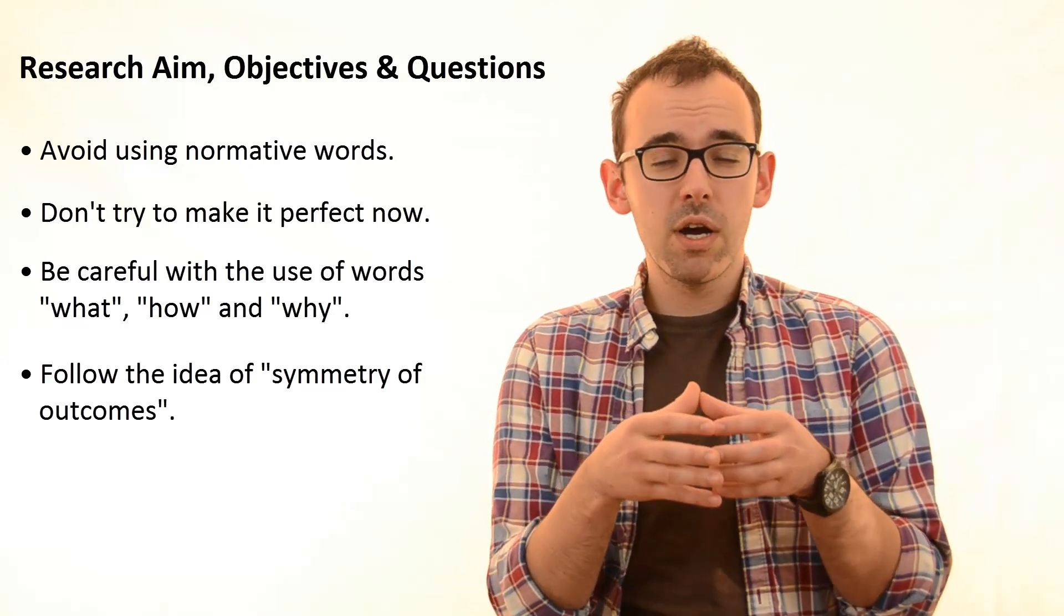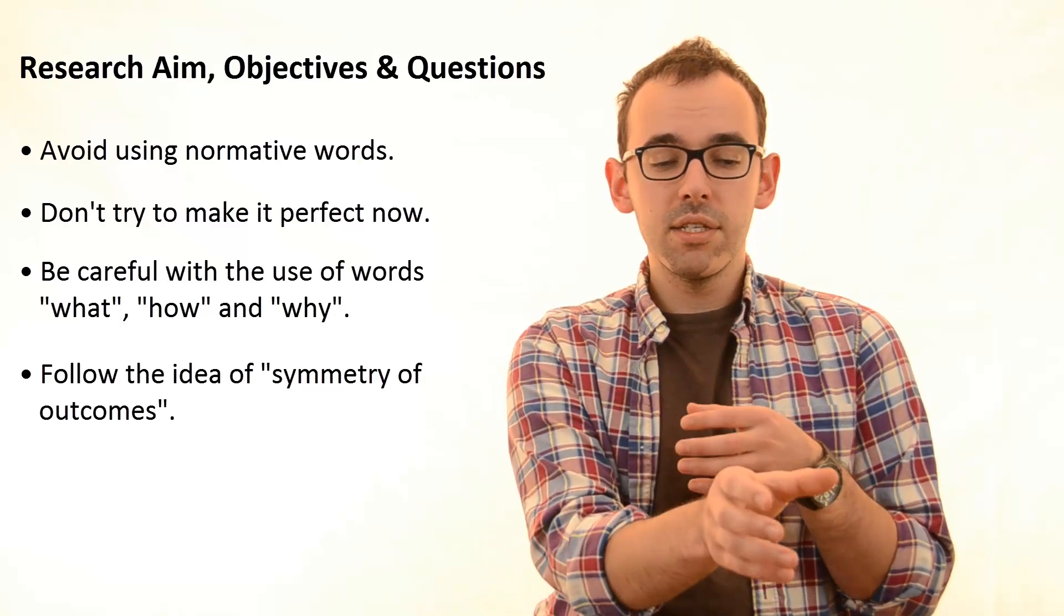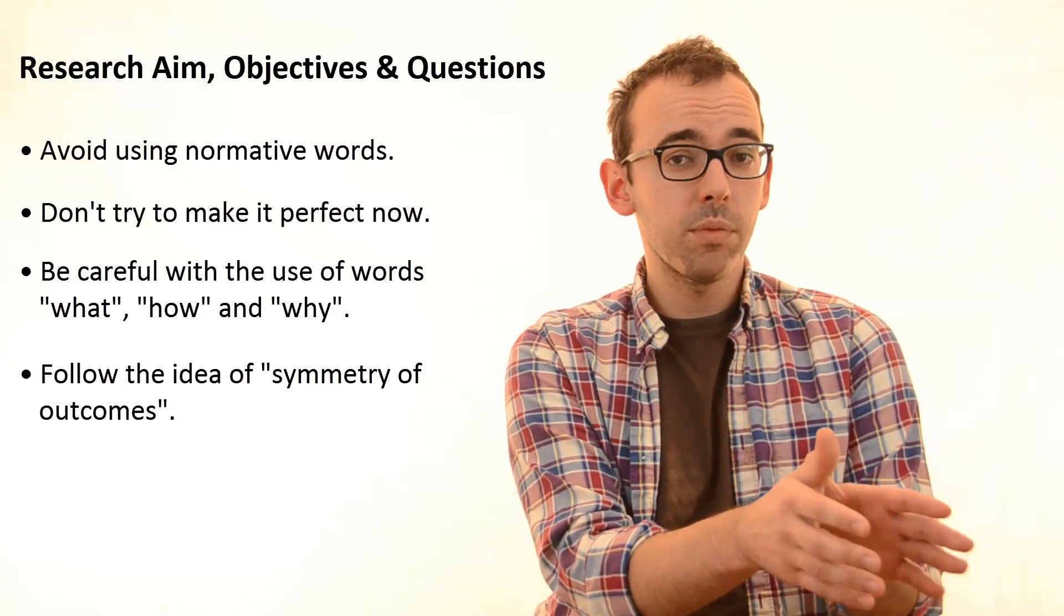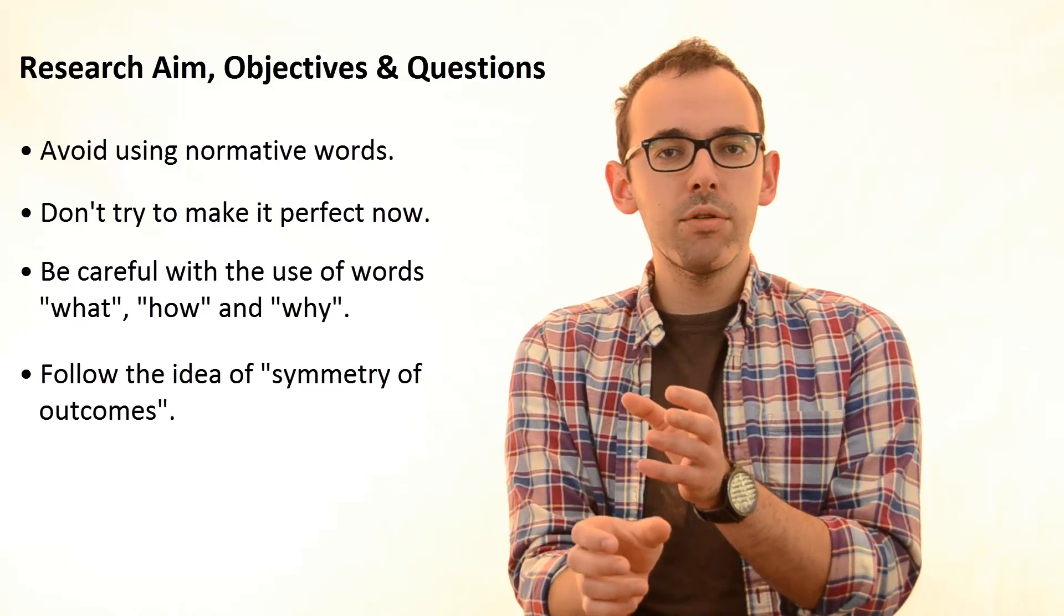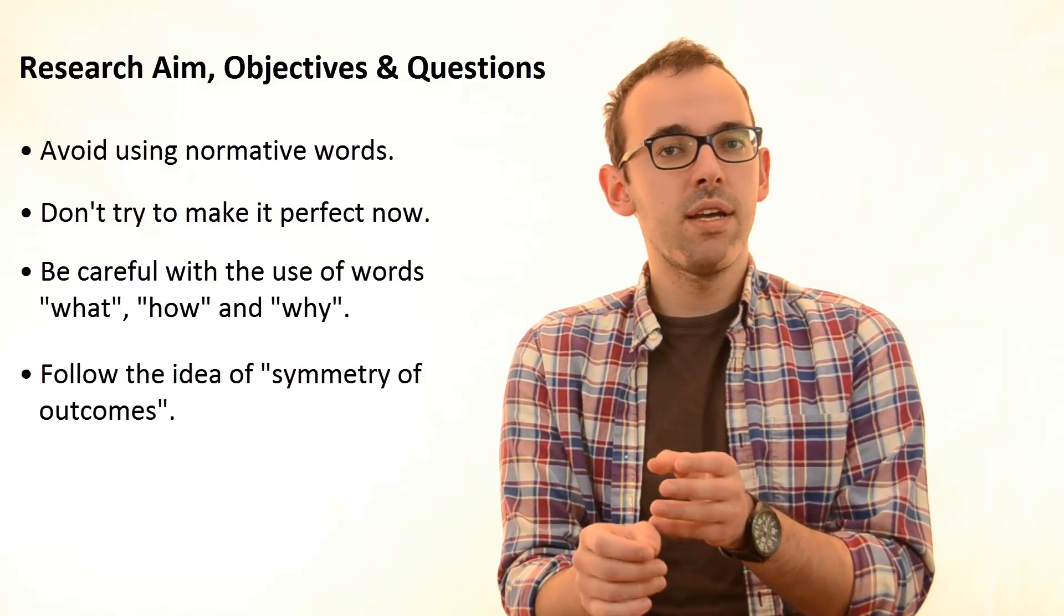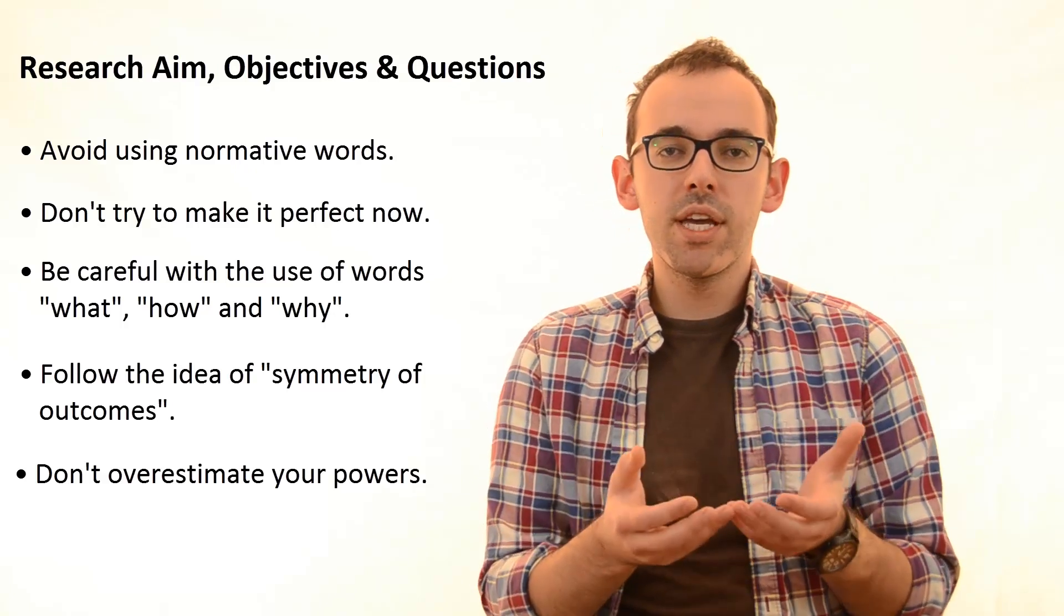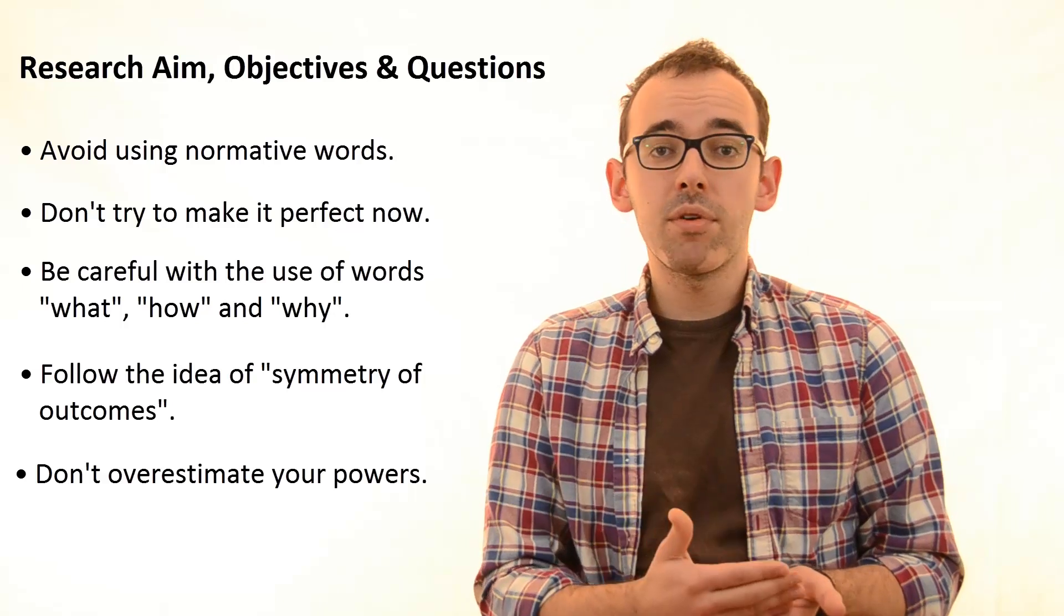Let's say you have taken some theories and you are trying to apply them to some phenomena that you see occurring. When symmetry of outcomes is achieved in the early beginning, it means that the answer that yes, these theories can be used to describe this phenomena is valuable, but also if your outcome will be no, these theories cannot be used to describe this phenomena, this outcome also has a value. Your research aim has to be stated in a way that it follows the idea of symmetry of outcomes.